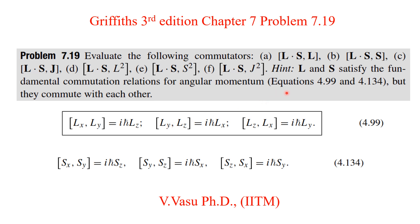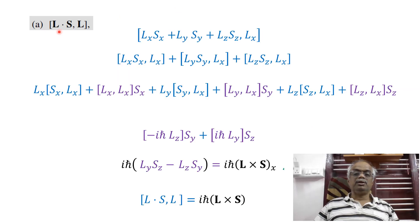Equation 4.99 is related to the commutation relation of the angular momentum operator L — LX, LY, LZ. Similarly, equation 4.134 is related to the commutation relation of spin angular momentum. Using these relations we have to find the other commutation relations. We will solve them one by one.